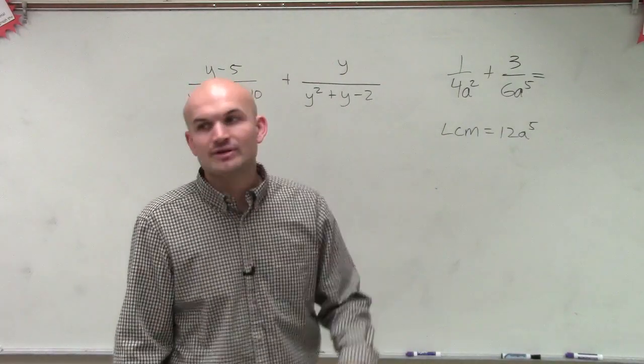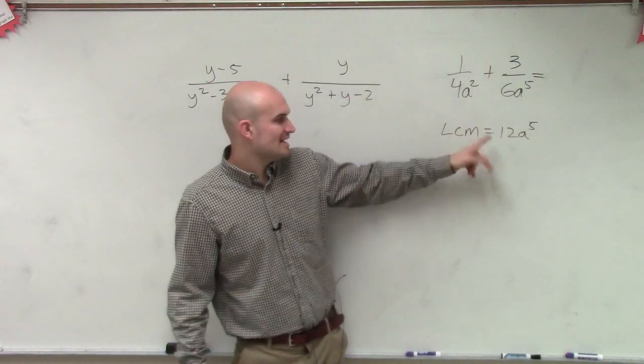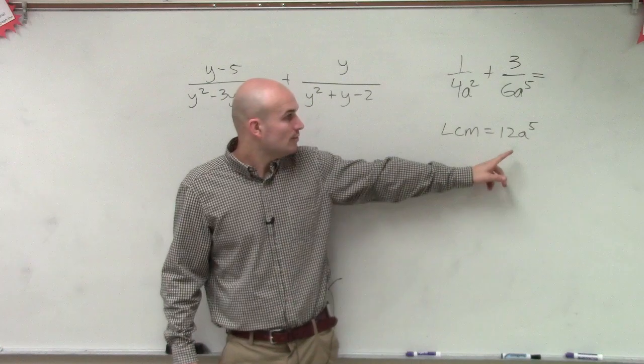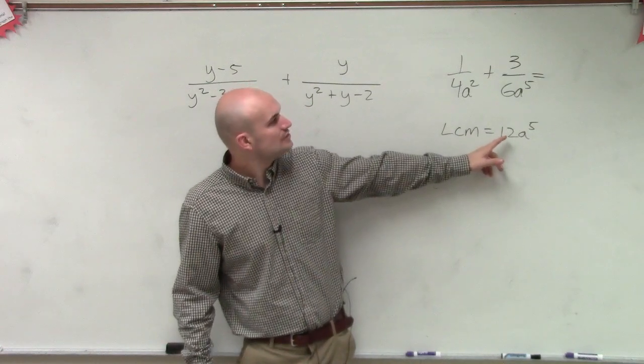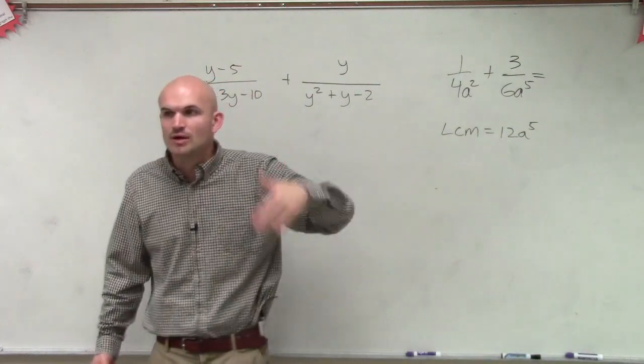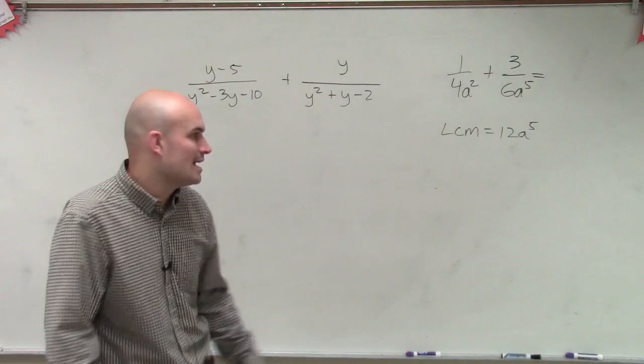Or that might reduce some redundancy, because the LCM in this case is 12. But you could also say a common multiple would also be 24, right? If you multiply them, it would be 24. But that's not the least common multiple. We always want to use the least common multiple so you don't have to simplify at a later time.